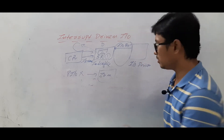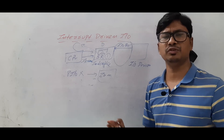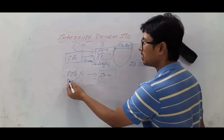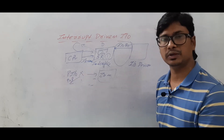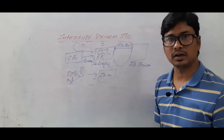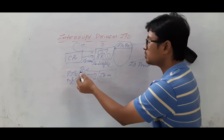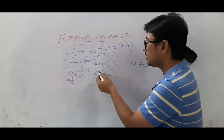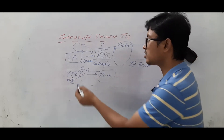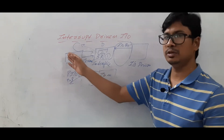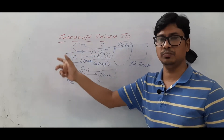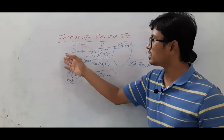In the interrupt-driven IO analogy: after ordering, the person knows the food will come in 30 minutes, so he plays PUBG on his mobile. When the delivery guy arrives nearby, he calls the person's number — that call is the interrupt signal. The person stops playing, collects the food, and eats. Similarly, the CPU executes other tasks and responds only when the interrupt arrives.